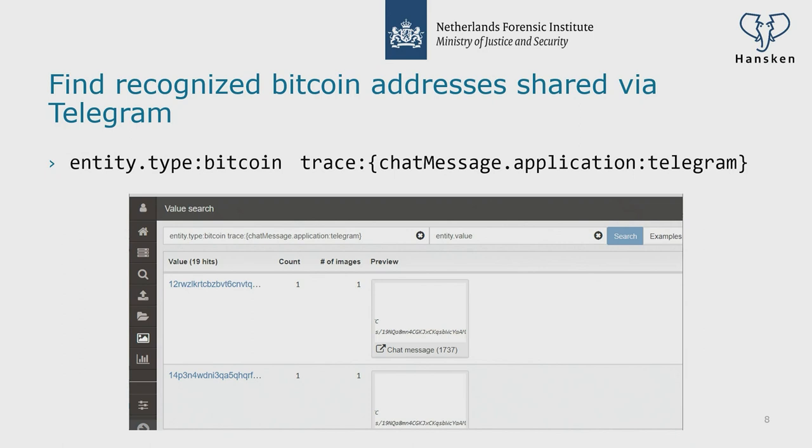If you change Telegram to WhatsApp, you get Bitcoin addresses communicated in WhatsApp messages. If you replace 'chat message application Telegram' with 'type chat message', you find any Bitcoin address in any chat message. Or if you use 'document.application.office', you get Bitcoin addresses contained in Excel spreadsheets. There's also a cheat sheet in the expert UI. Value search is really powerful and we'll have more examples on it.